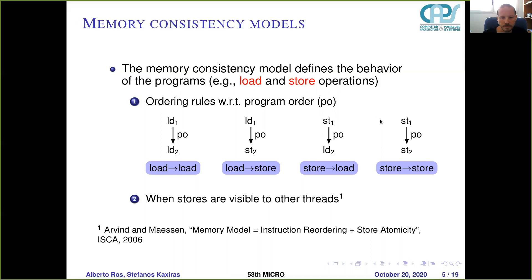But it's not only ordering rules. As mentioned in the RISC-V paper, a memory model equals instruction reordering plus store atomicity. That means it's also important when stores are visible to other threads, and this is the key difference between the two models we explore in this work.